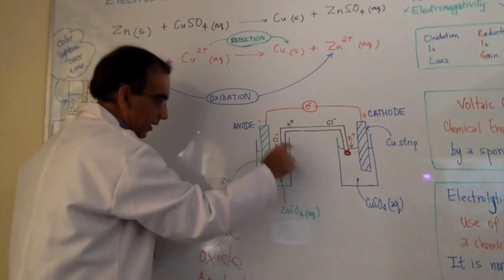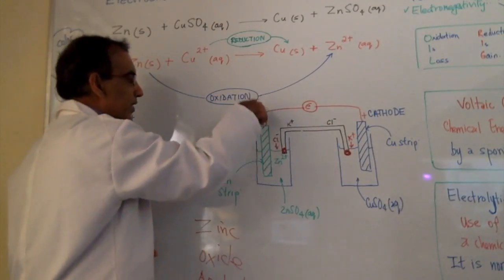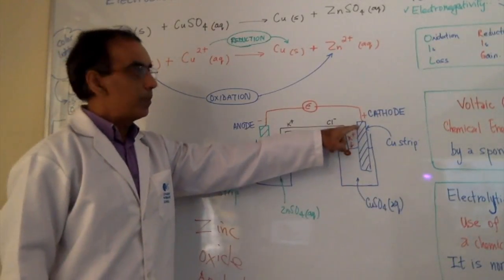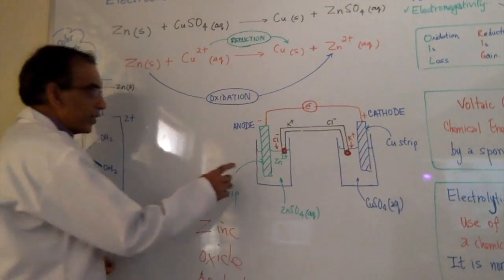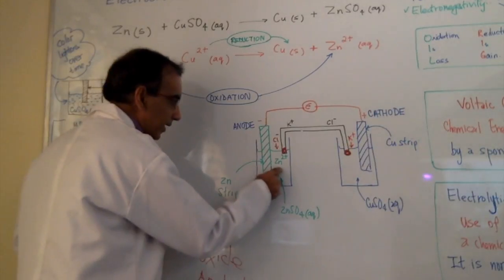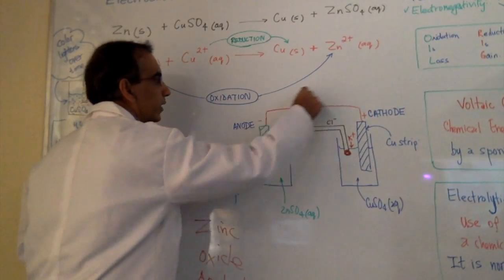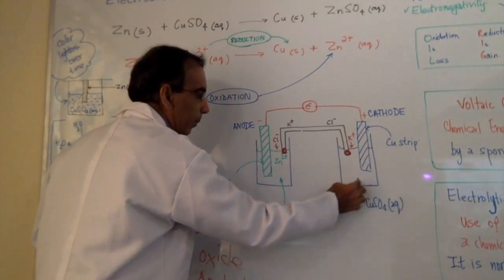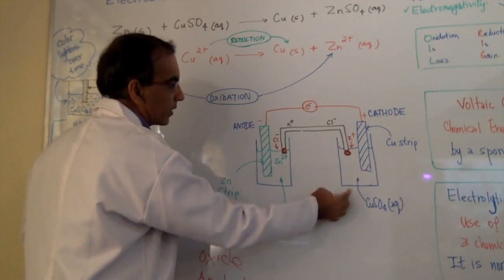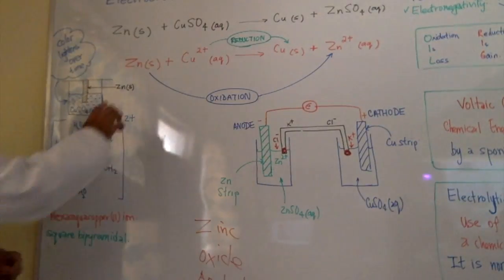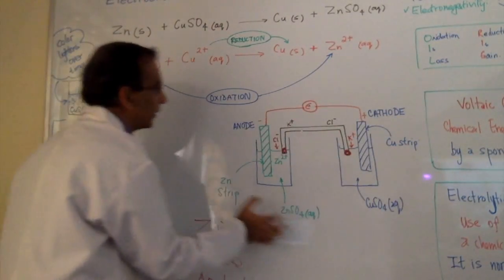Zinc sulfate goes into one of the beakers and put it on top of the zinc plate. Put copper sulfate in this beaker and put a copper plate in here. What's going to happen is that zinc would allow electrons to leave this side and go over to this side, and then copper would take out those electrons, and copper would be formed on that side. So this is what would be happening in this voltaic cell.